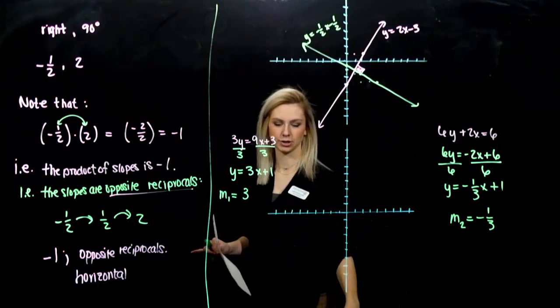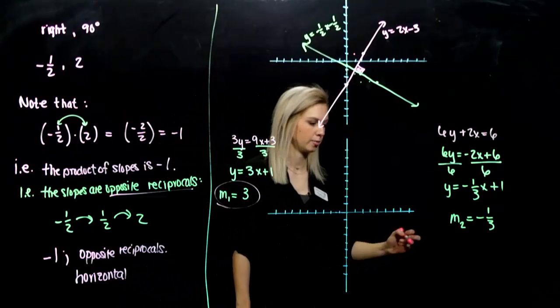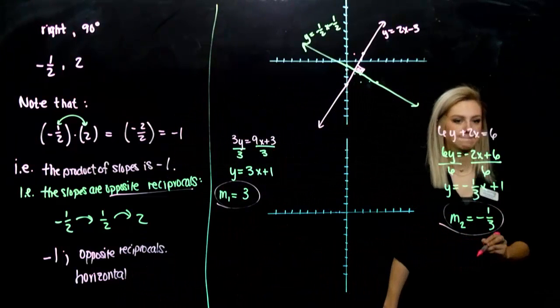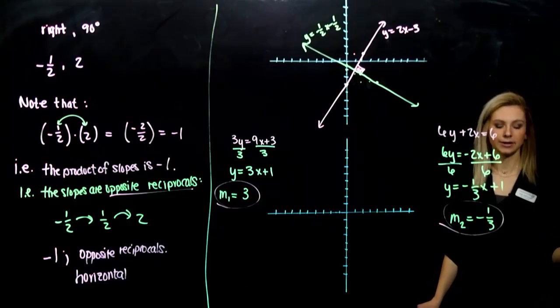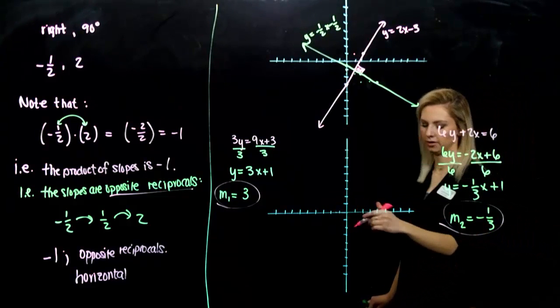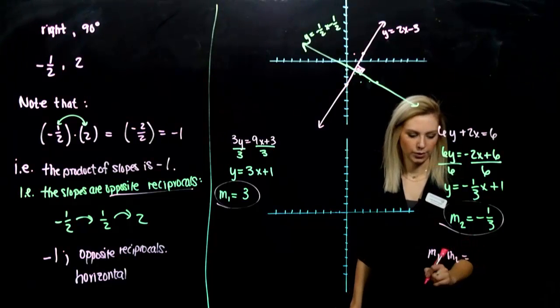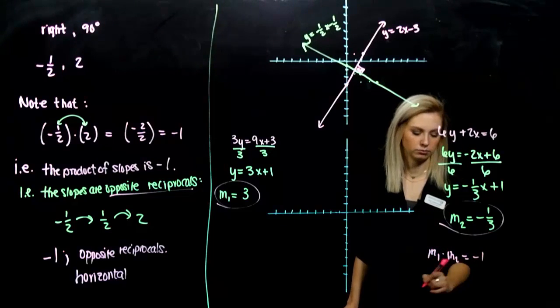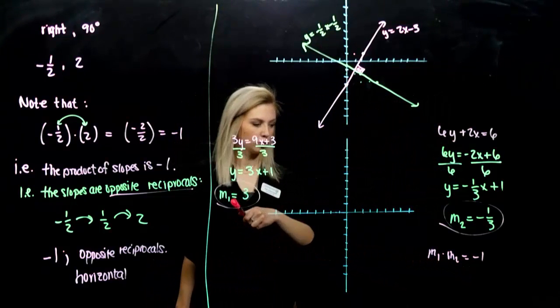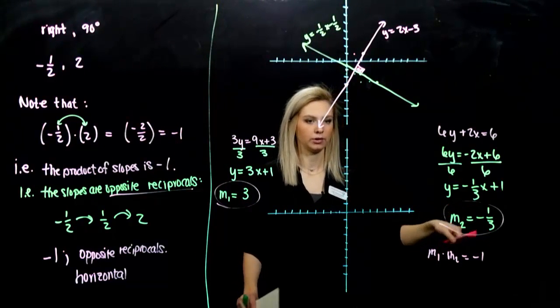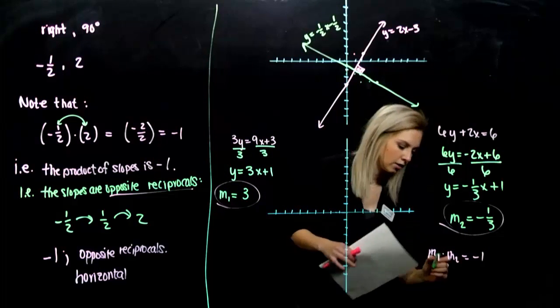So before we draw a picture, what is the relationship between the two? Here's my first slope. Here's my second. What about those two lines? Are they perpendicular? Yes, because I could multiply them together. If I say m1 times m2, what do I get out? Minus 1. Or we could talk about m1 is the opposite reciprocal of m2. So we know these lines are going to be perpendicular.